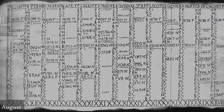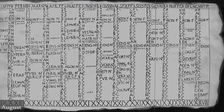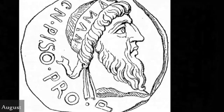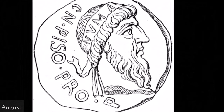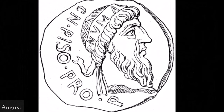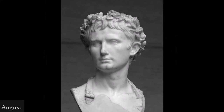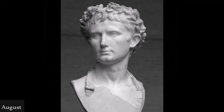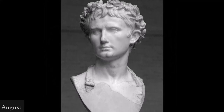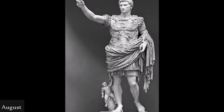August was originally named Sextilis in Latin, because it was the sixth month in the original ten-month Roman calendar, with March being the first month of the year. About 700 BC, it became the eighth month when January and February were added to the year before March by King Numa Pompilius, who also gave it 29 days. Julius Caesar added two days when he created the Julian calendar in 46 BC. In 8 BC, it was renamed in honor of Emperor Augustus. Caesar Augustus was the first Roman emperor, reigning from 27 BC until his death. His status as the founder of the Roman Principate, the first phase of the Roman Empire, has consolidated a legacy as one of the most effective leaders in human history.